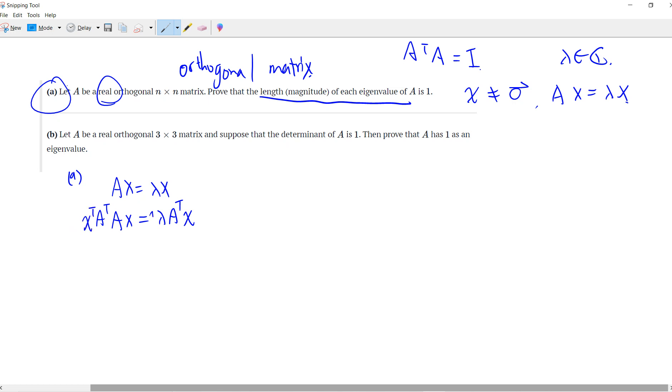So we have x transpose A transpose A x. And this is the identity, right? So x transpose x. And what is this? Lambda is a number, so we have lambda x transpose, and then this is also lambda x, right?